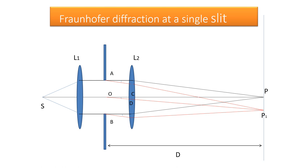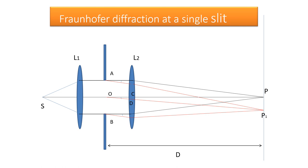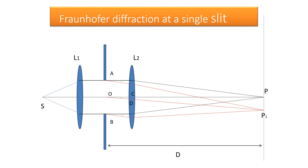Next is Fraunhofer diffraction at a single slit. Here we have a monochromatic source S, an aperture AB of width small a, and two converging lenses, so a plane wavefront is incident on the slit, and this is the screen. We would expect a sharp image of the slit on the screen, but since the beam of light while passing through the slit is diffracted and spreads out, we get a diffraction pattern consisting of a central bright band flanked by alternate dark and bright bands of decreasing intensity.